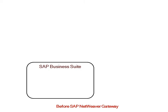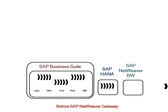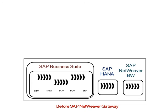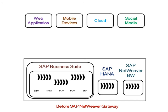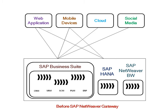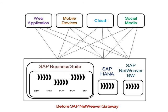If you take the case of different systems before SAP Netweaver Gateway technology, while creating applications for different consumers like web, mobile devices, cloud or social media, the developers needed to create and build applications for each consumer individually. That means it is a point-to-point solution where the developer needs to create and build a separate application for each consumer, which increases the cost and complexity for the client.